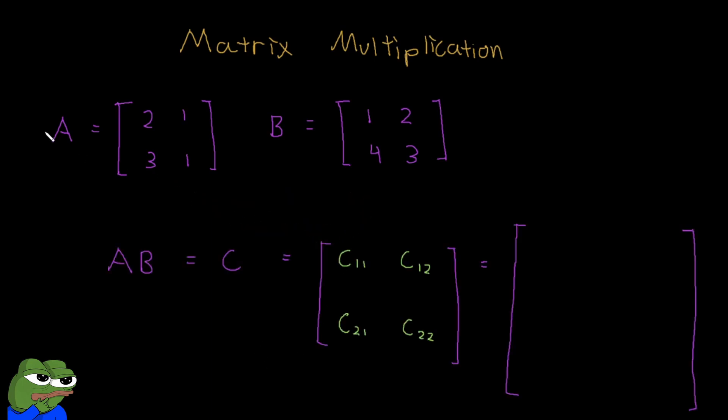Now for the actual multiplication. So it's kind of like a pattern. If we want to take our element of C11, if we want to get that, we look at the first row of our first matrix, which is A, and then the first column of our second matrix, which is B. Now we multiply the elements together. So we start here with two times one.